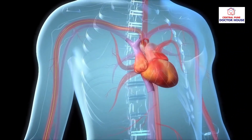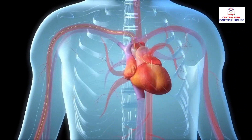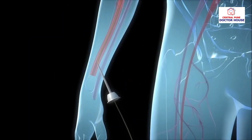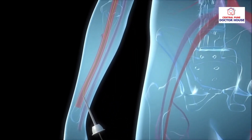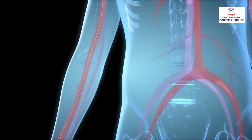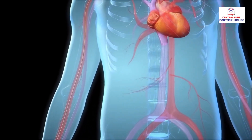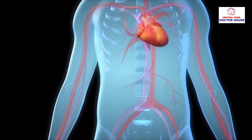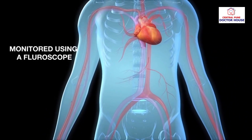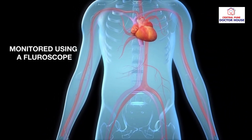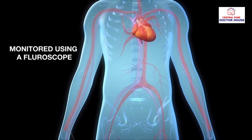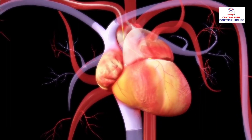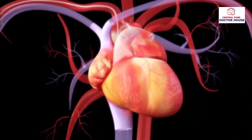The guide wire is guided through the arterial system up to the heart. A flexible catheter is slipped over the wire and threaded up to the heart. This process is monitored using a continuous X-ray imaging device called a fluoroscope.